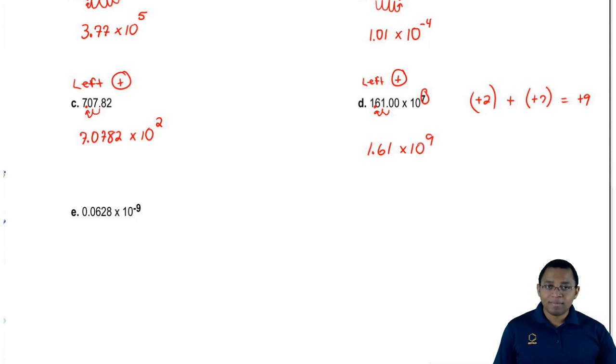Now finally, this last one. Again, we know the coefficient needs to be between 1 and 10. We want it between the 6 and the 2, so let's move it over to the right. We have to move it over two spaces to the right.